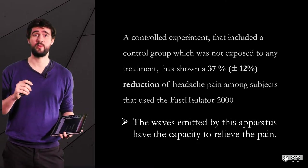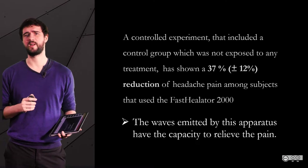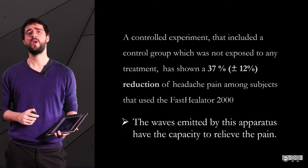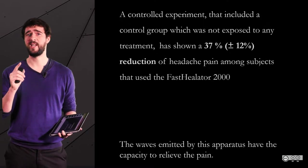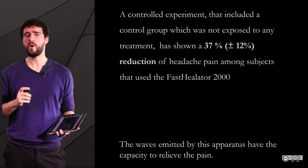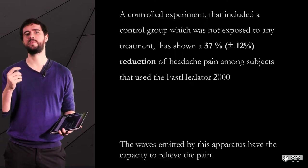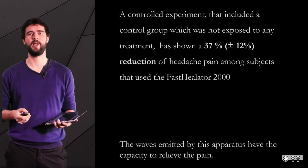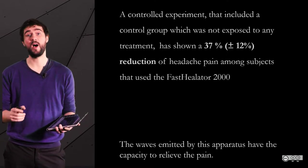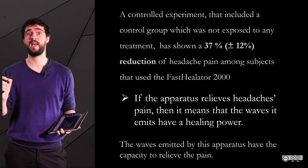We will assume here that, surprisingly, the data are actually reliable, in the sense that a proper scale was used to measure headaches. Still, there's a problem with that argument — can you identify it? Firstly, there's a hidden premise, a suppressed premise. The person who made this argument assumed that the only reason why headache pain can be relieved is because of the waves emitted by the apparatus. So if we decompose the full argument, it goes this way: a controlled experiment has shown a 37% reduction of headache pain among subjects that used the Fast Helator 2000. Then you have the hidden premise: if the apparatus relieves headache pain, then it means that the waves it emits have a healing power.